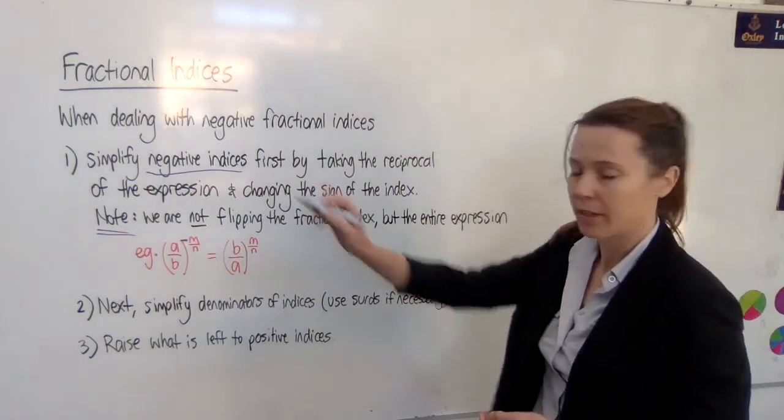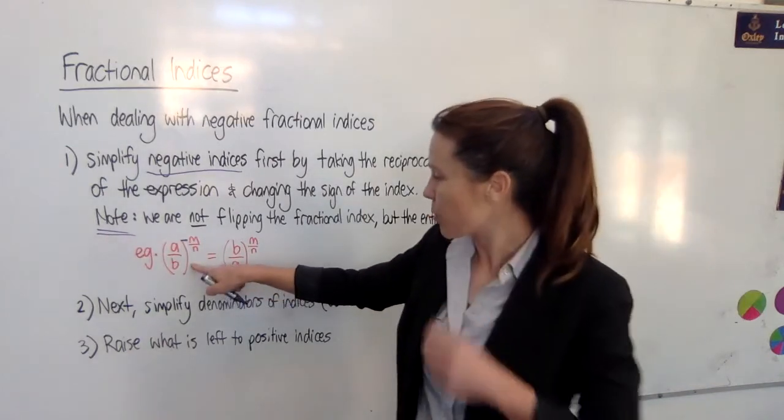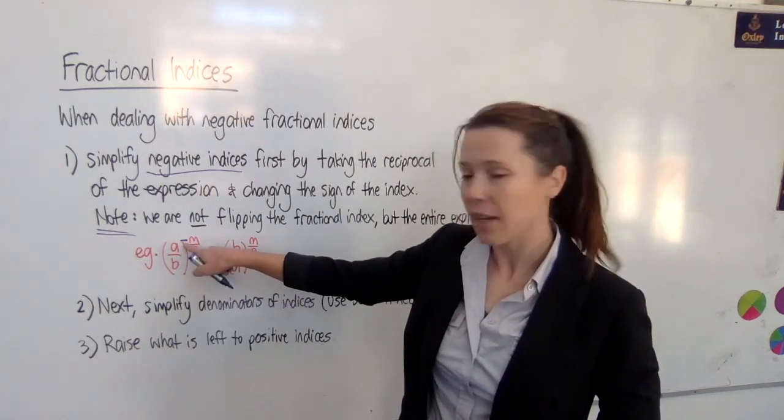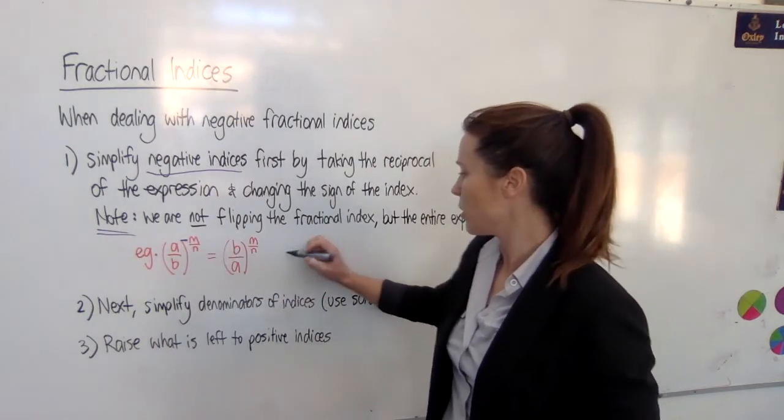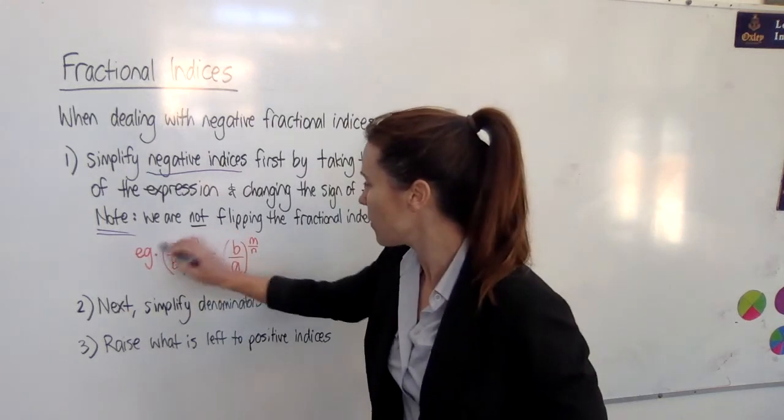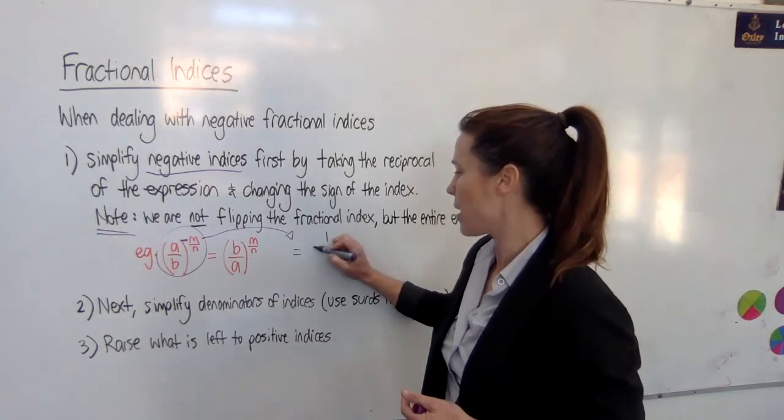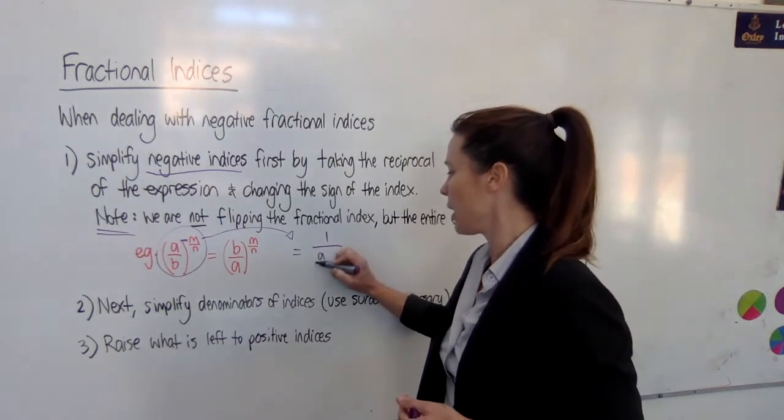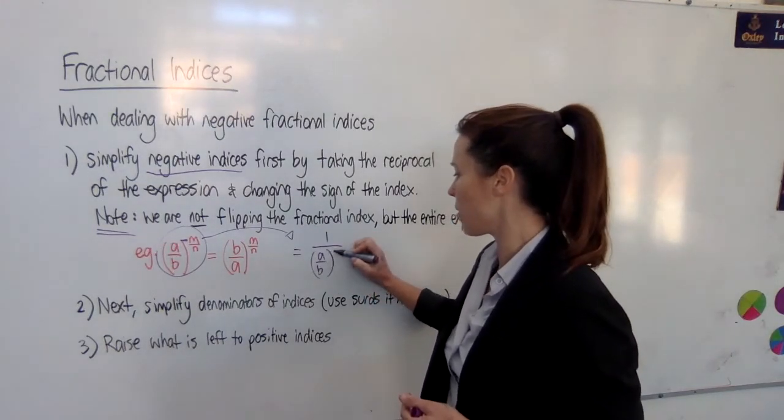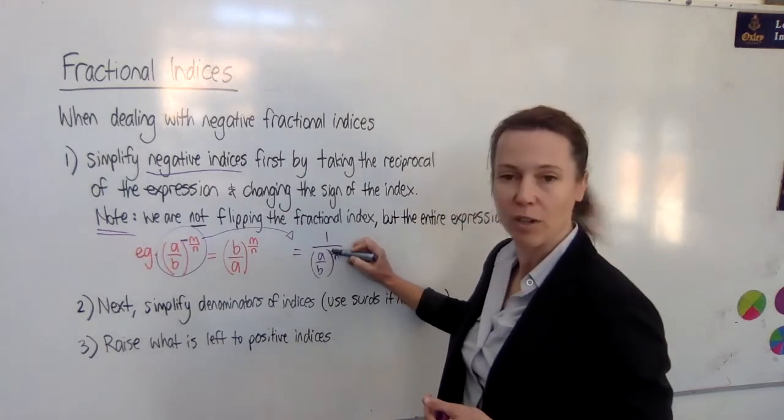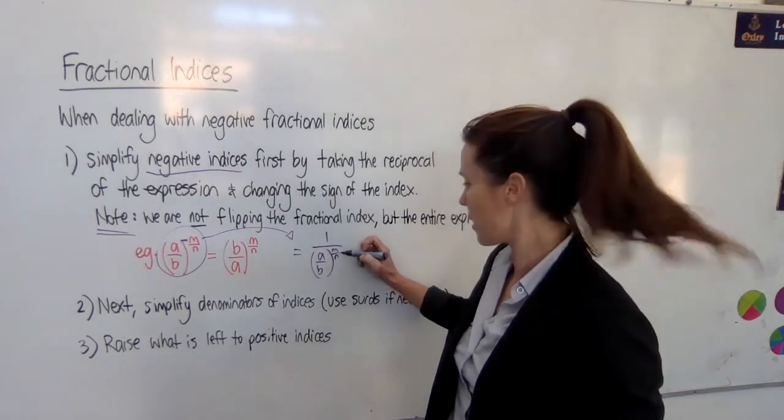Now if you want to see why this happens so you can understand, think of this original expression we have here. To get rid of the negative, we've learned that what we can do is take all of that and say that's equal to 1 over a over b all to the power of m over n, and see how I've got rid of the negative in that step.